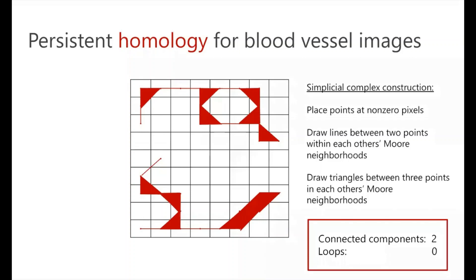So for example, this binary image we see has two connected components, one in the top, one in the bottom, and one loop, not zero loops, with a loop given here.